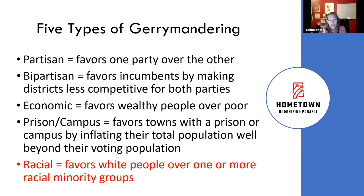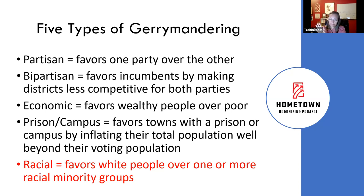Last but not least, we have racial gerrymandering, which favors white people over one or more racial minority groups. What makes this one different from all the others? It's illegal. All of the other types — partisan, bipartisan, economic, campus, prison gerrymandering — are 100% legal. There is no federal rule against any of them. Only racial gerrymandering is illegal. States can make laws against these other things, but at the federal level the only thing the federal government will protect us against is racial gerrymandering.